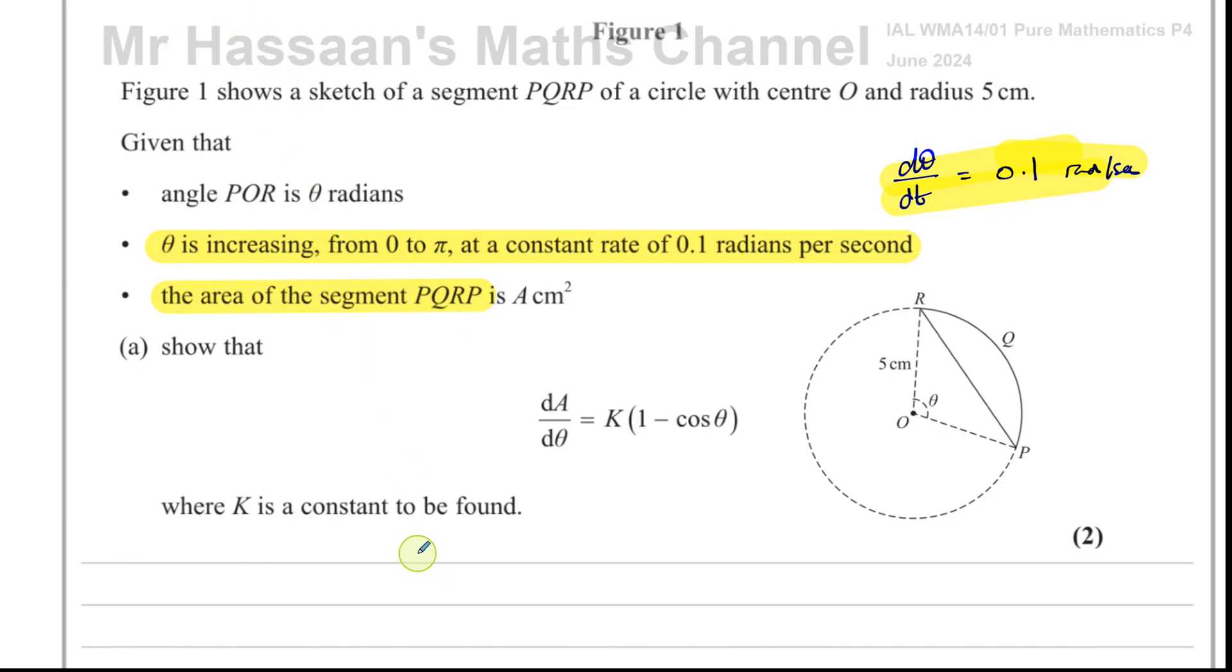Well, basically, dA/dθ is found. First of all, let's find what A is. The area of the segment, which is this here, is like the area of the whole sector minus the area of this triangle. Remember, this is also the radius, which is five centimeters. So the area of the whole sector, the area of a sector is given by 1/2 r² theta.